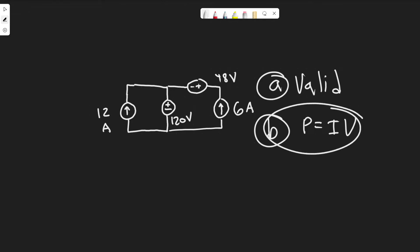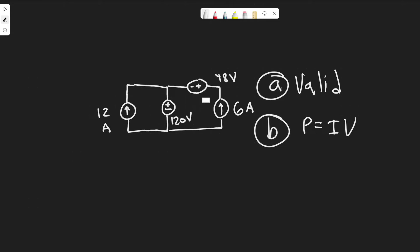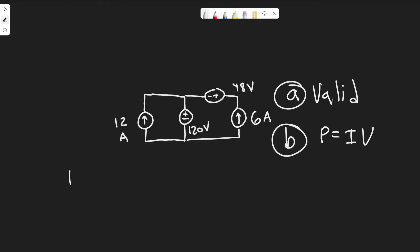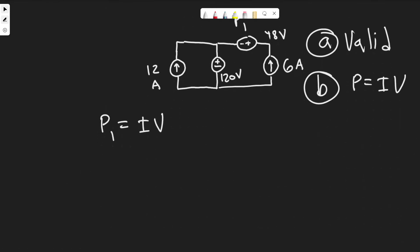Power equals current times voltage, and we're going to find the power dissipated by each voltage source. We're going to add these values up to get the total power dissipated, which equals the power developed by the current sources. Let's start with the first one — I'll call this P1. P1, the power dissipated by this source, equals IV. We already know the voltage is 48 volts, so P1 equals I times 48.